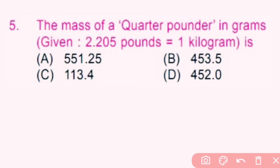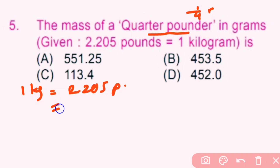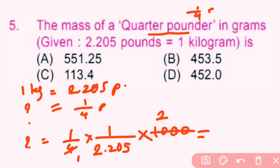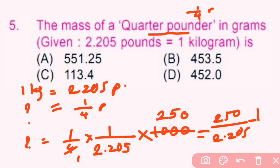Question number 5: The mass of a quarter pounder in grams is dash. A quarter pounder means 1/4 pound. According to the question, 1 kg equals 2.205 pounds. So for 1/4 pound, it equals 1/4 multiplied by 1/2.205 kg. To convert to grams we multiply by 1000, which gives 250 divided by 2.205.